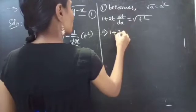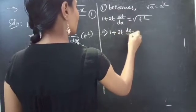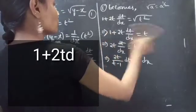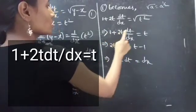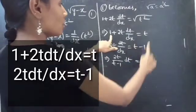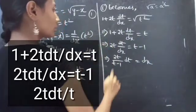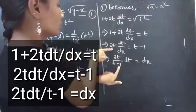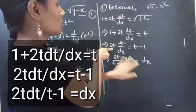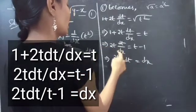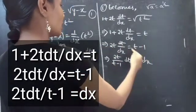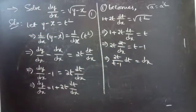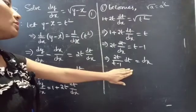So this becomes 1 plus 2t·dt/dx equals t. Now take the 1 to the right-hand side to get 2t·dt/dx equals t minus 1. We can write this as 2t/(t minus 1) dt equals dx, simply taking dx to the right-hand side and (t minus 1) to the left-hand side. Here the variables are separable.